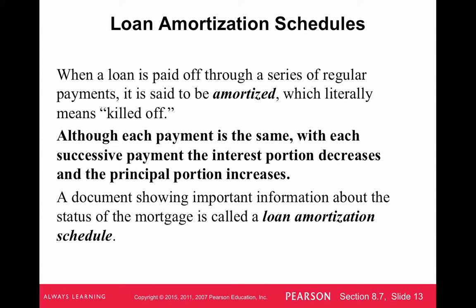When a loan is paid off through a series of regular payments, it's said to be amortized, which literally means 'killed off.' Although each payment is the same amount, with each successive payment the interest portion decreases and the principal portion increases. We'll show you how this is broken down in an amortization schedule.